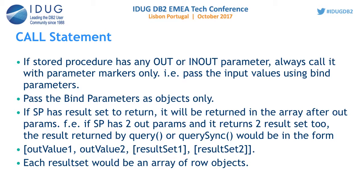If a stored procedure returns results, they are returned in the form of an array. If the stored procedure also returns a result set, the output parameter values are returned first, followed by the result set. The output values correspond to out or in-out parameters, and the result set comes from select queries internally executed by the stored procedure that open a cursor and return data.